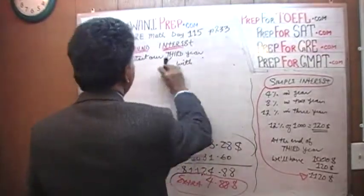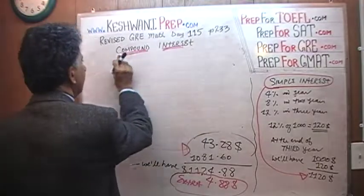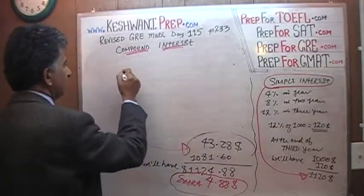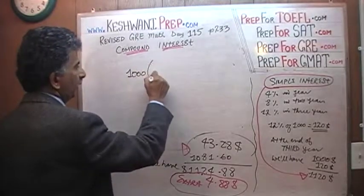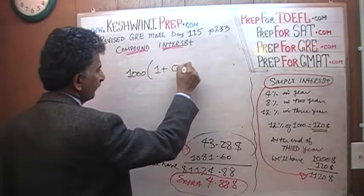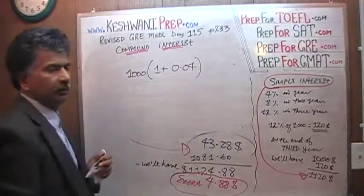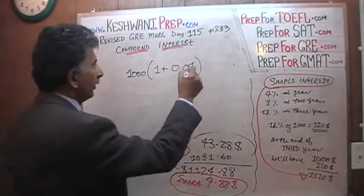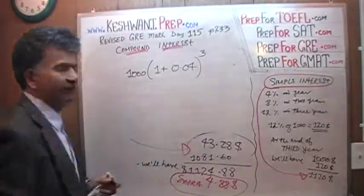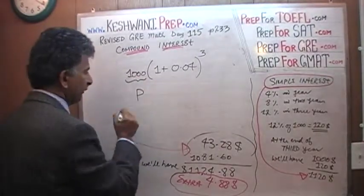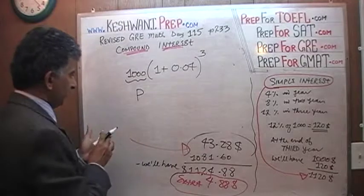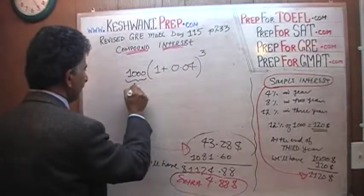We'll do the same exact thing that we did yesterday. So we started out with $1,000 our investment, 1 plus we are earning 4% interest, 4% interest over a period of 3 years. That's it. That's your formula. This $1,000 here is our principal.